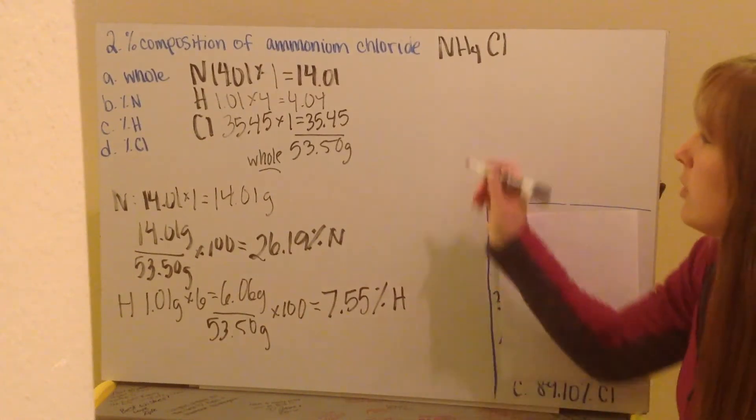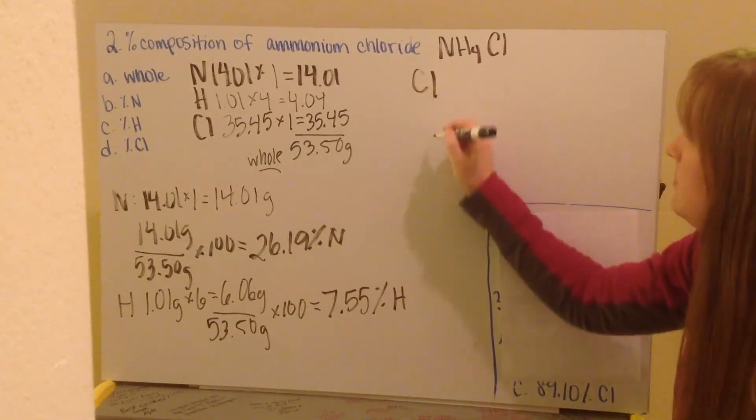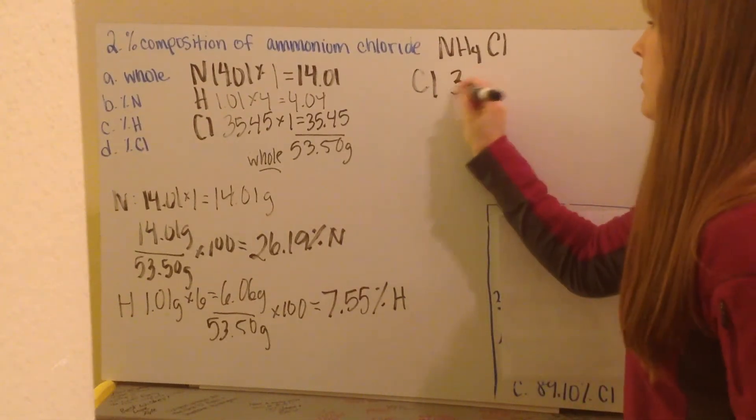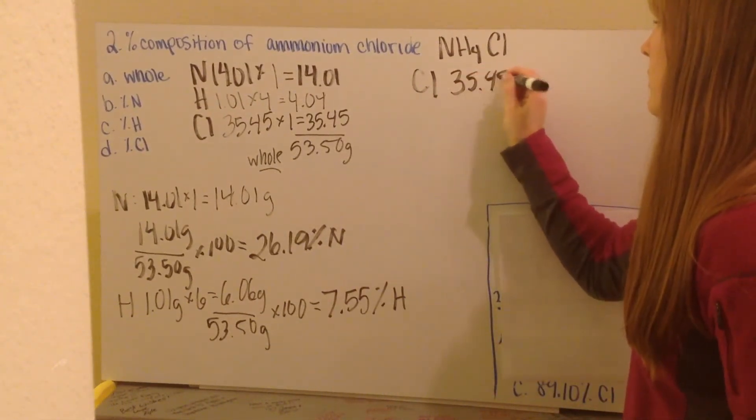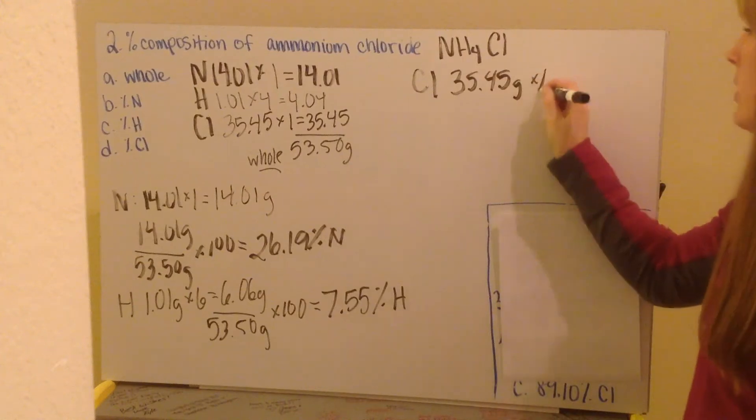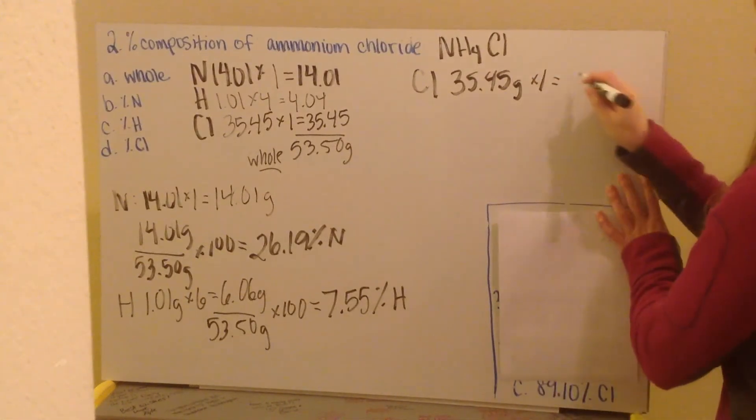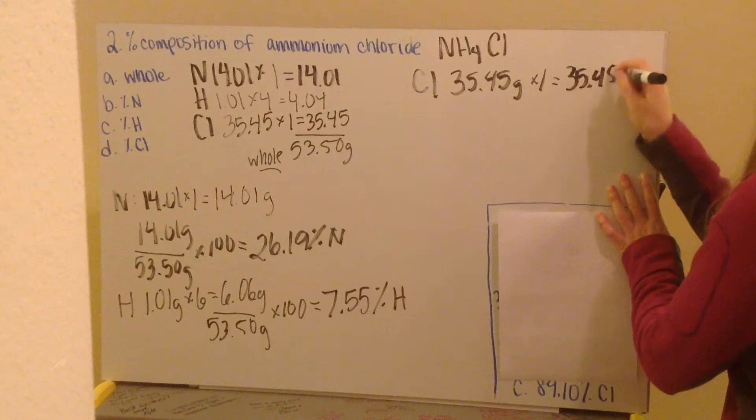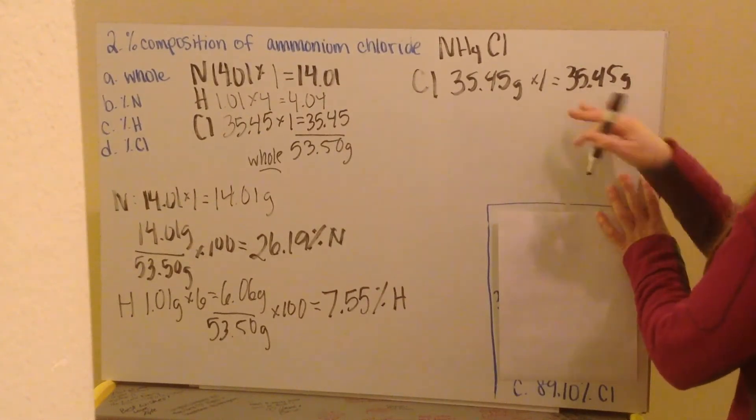Finally, I go for chlorine. Chlorine has a mass of 35.45 grams, and I have one chlorine. I take that and divide it by my whole, which is my 53.50 grams.